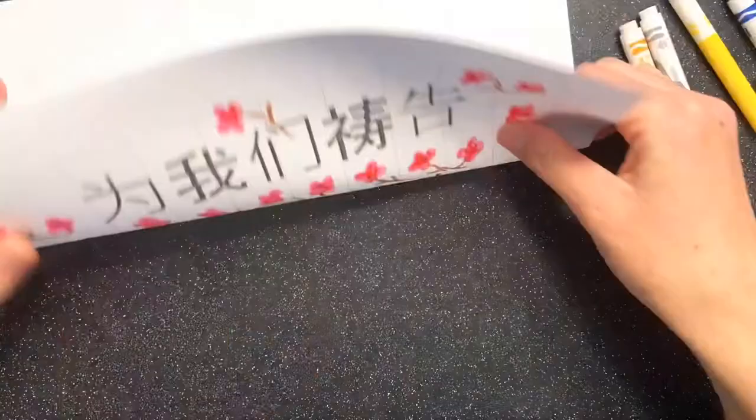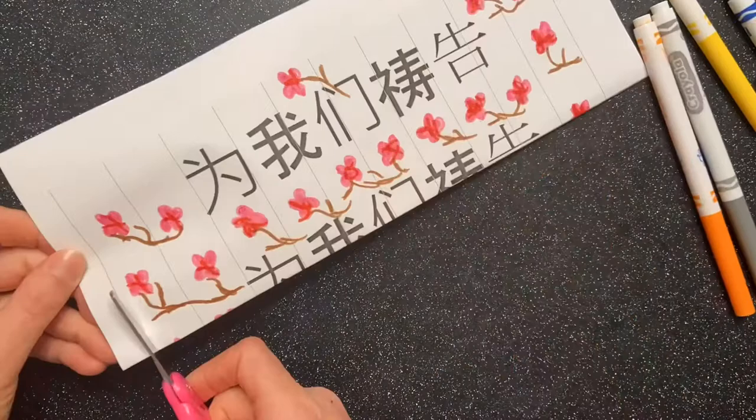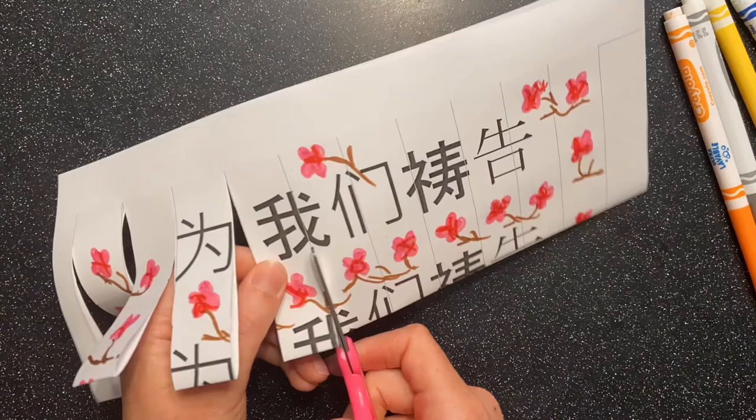Once you have finished decorating your lantern, fold your paper in half and then take a pair of scissors. Start cutting on the lines beginning at the end that is folded together. Make sure not to cut all the way across the paper.